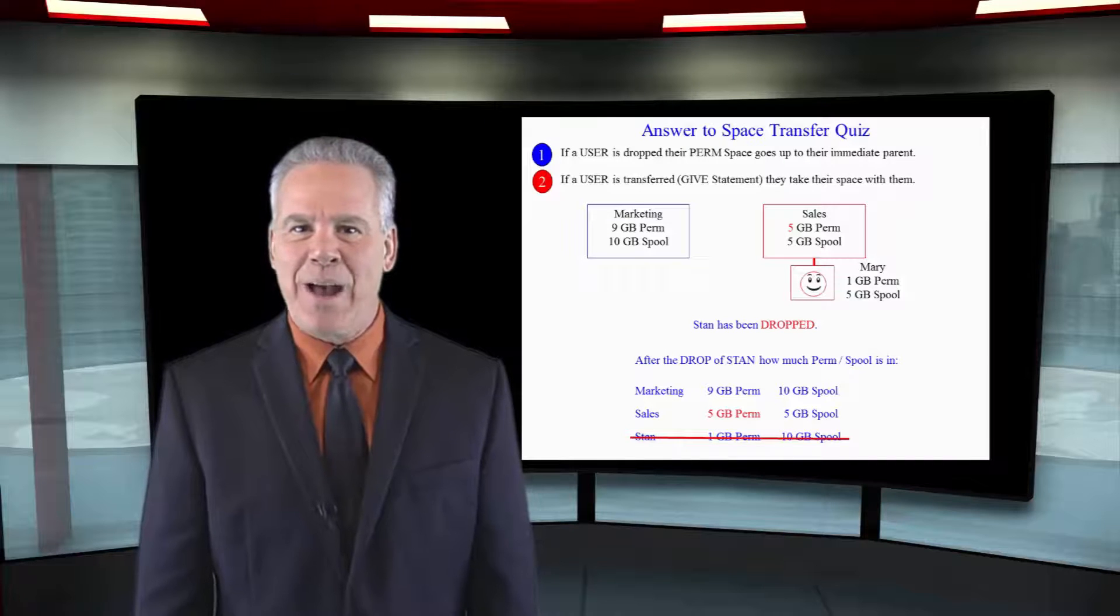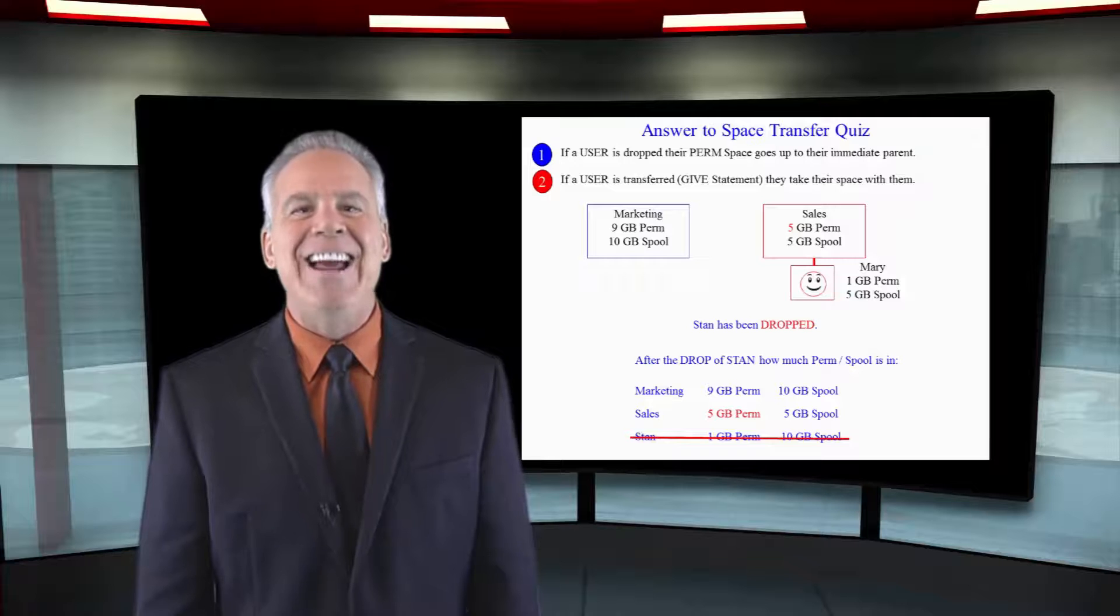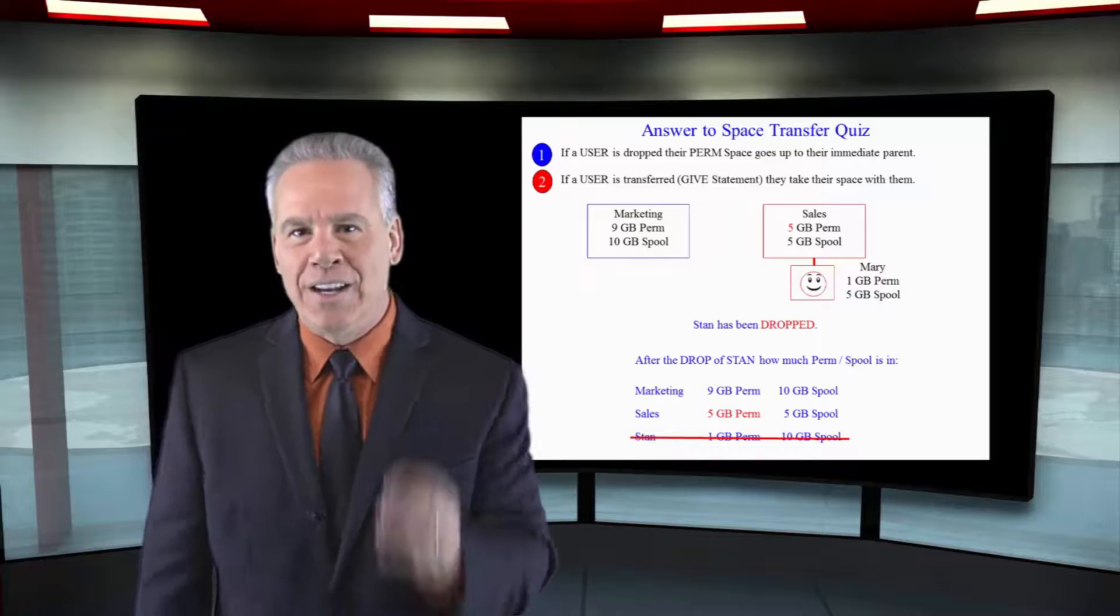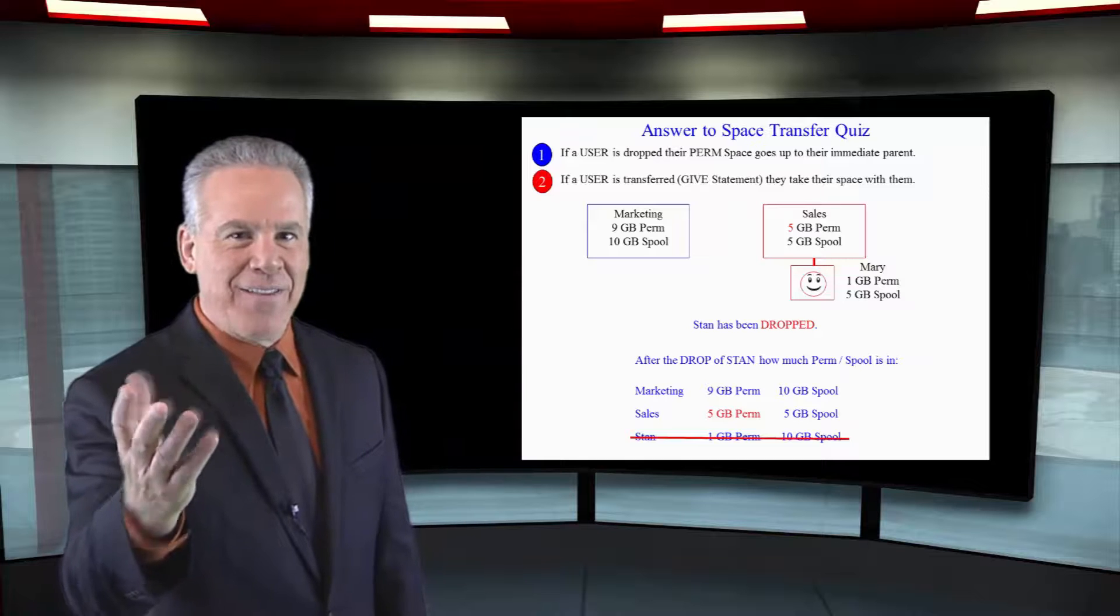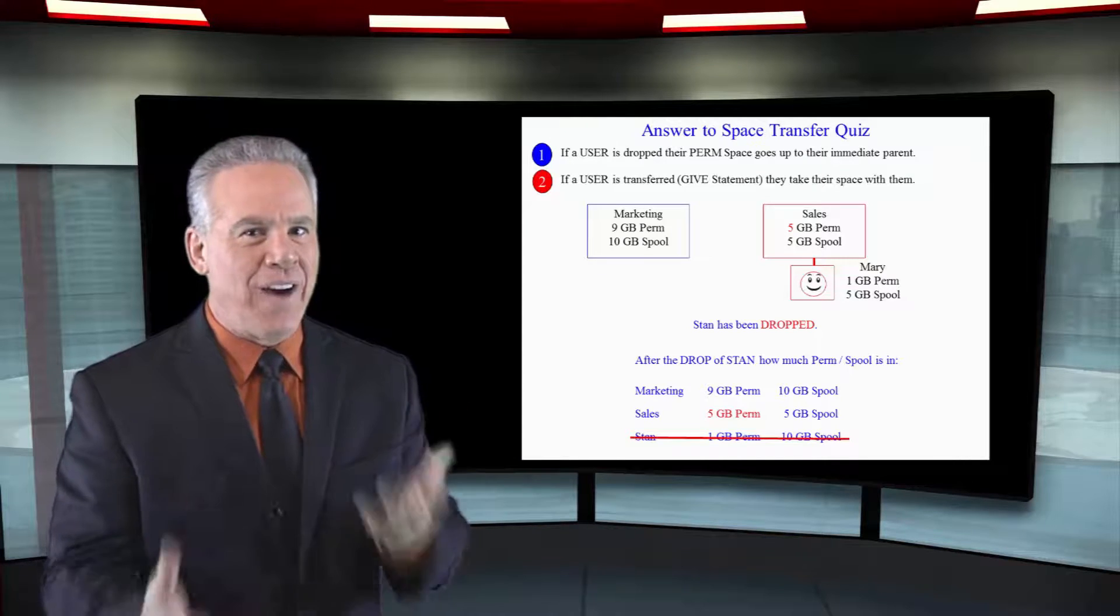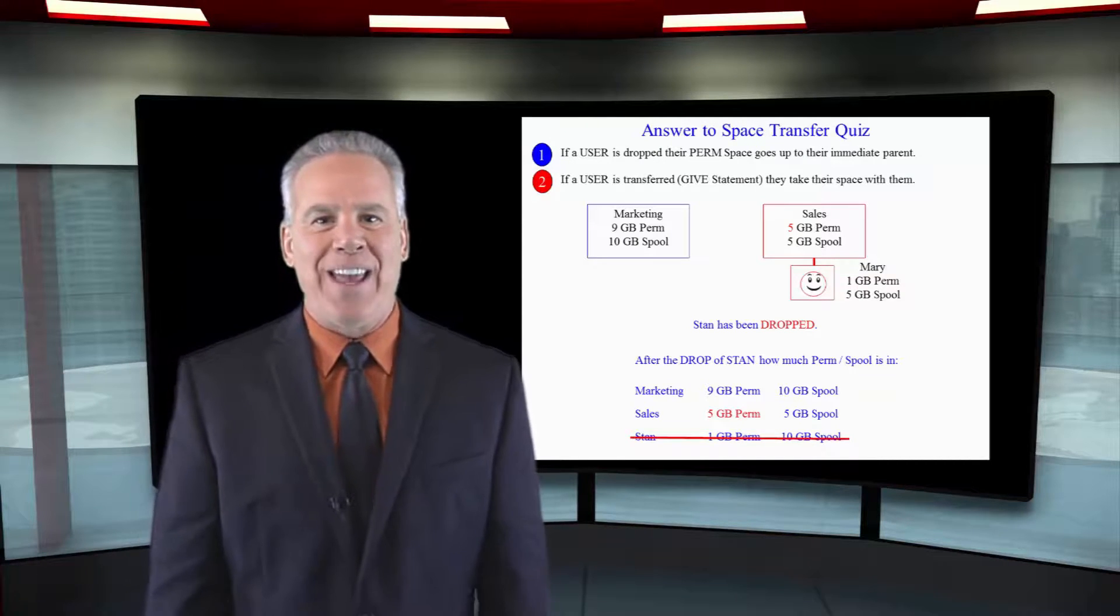Stan's been dropped. He has no space. He's not even in the system. Marketing, 9 and 10. Sales, 5 and 5. Mary, 1 and 5. And that's the way it works.